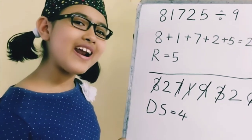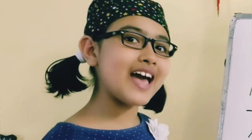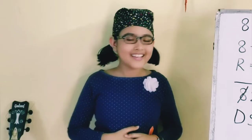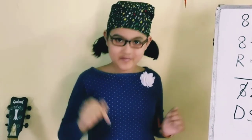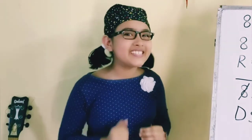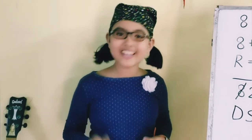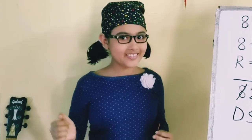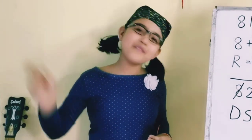Now, if you get the digit sum as 9, there is 0 remainder because 9 is divided by 9. So, that's it for today. If you like this video, please don't forget to subscribe to this channel, like this video, and bye-bye.